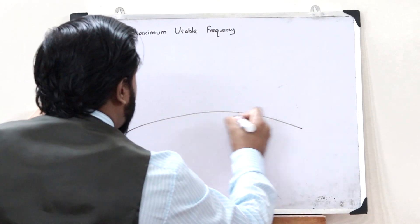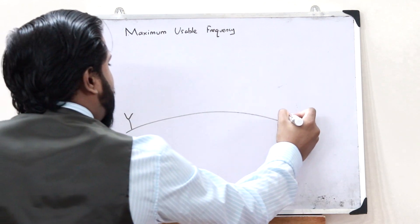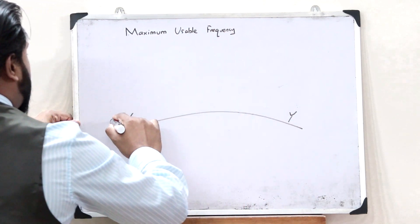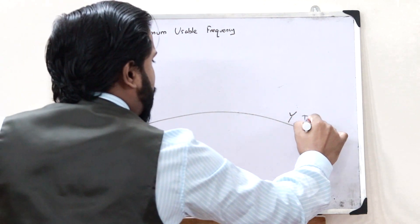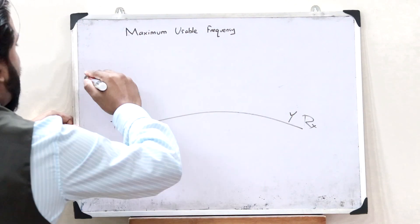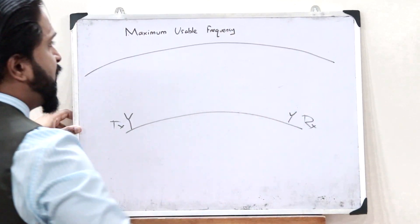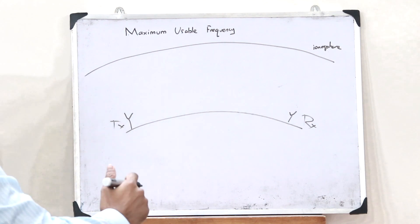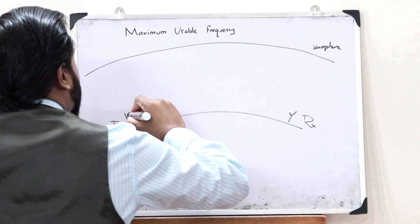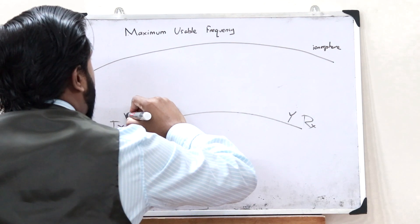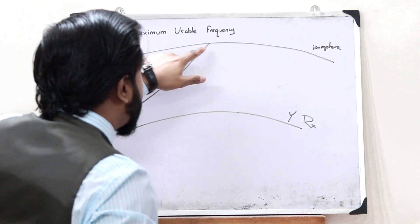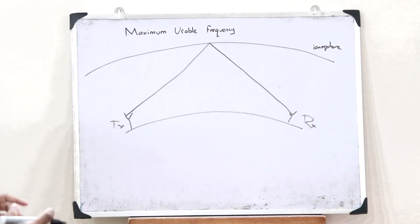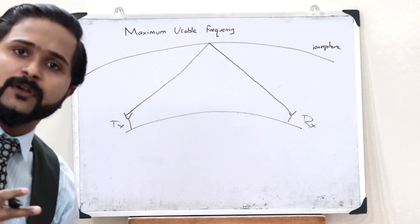Let us consider a transmitter antenna and a receiver antenna on the surface of earth. This is the curved surface of earth. Let this be a transmitter antenna and let this be a receiver antenna, and let this be the ionospheric layer of the atmosphere. In the case of sky wave propagation, the transmitter antenna sends a particular signal onto the ionosphere, and when it reaches the ionosphere it gets reflected back onto the receiver.